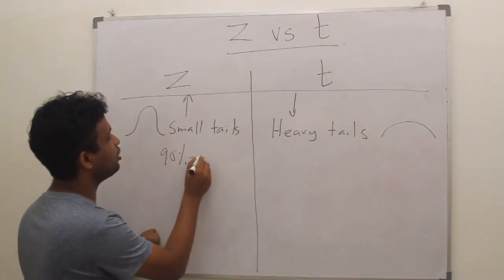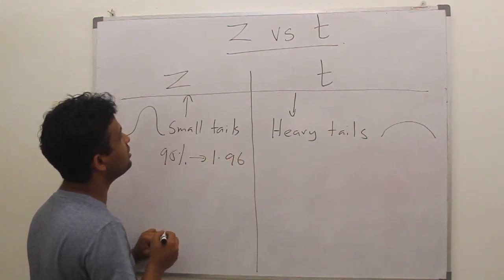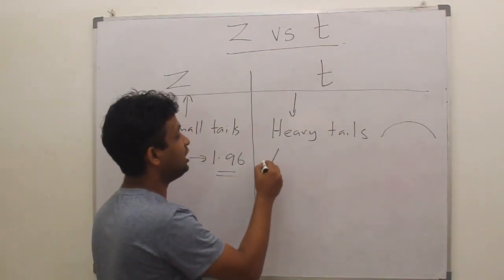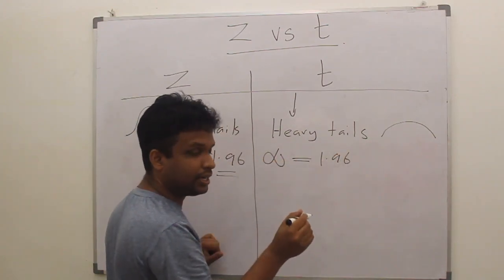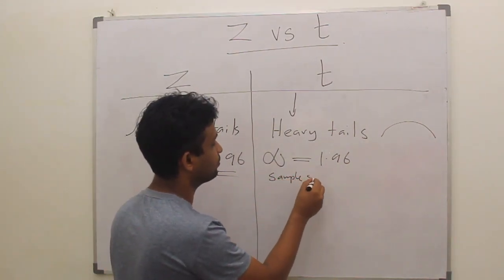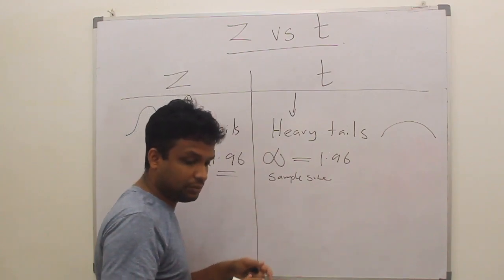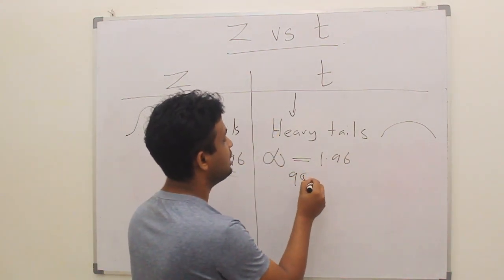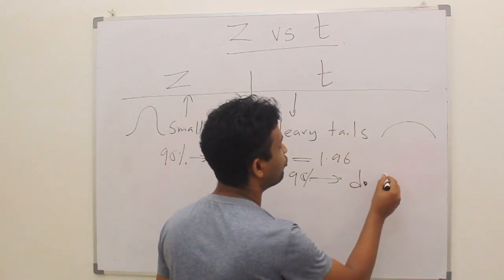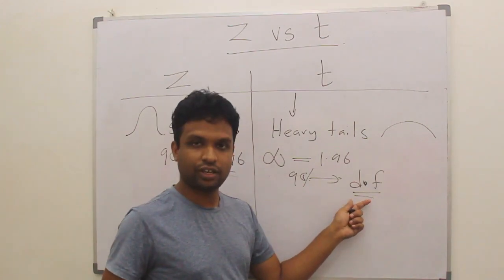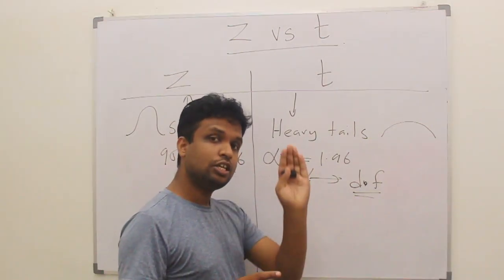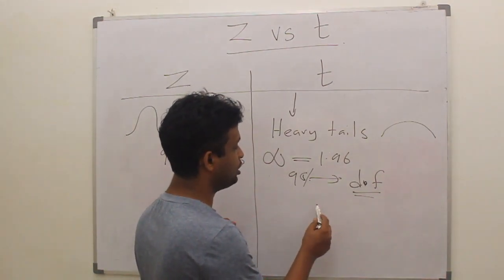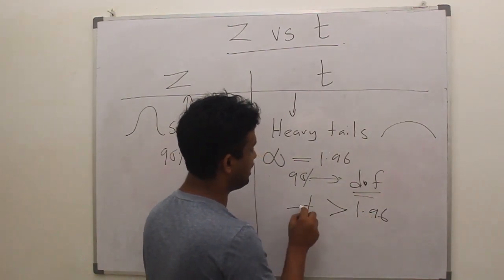Because of that, the 95%, the cutoff will be at 1.96 in Z-distribution. But in T-distribution, we don't have a fixed value. At infinity, we will have 1.96, but it depends on the sample size. We don't call this sample size. We call this cutoff level, or this T-value. The 95% depends on something called degrees of freedom. How to get the degrees of freedom, that is another lecture. Generally, this 95% value will be more than 1.96.